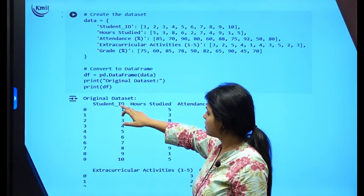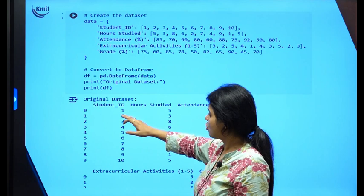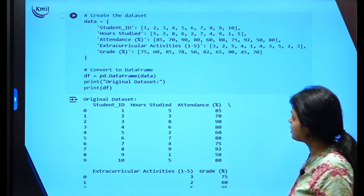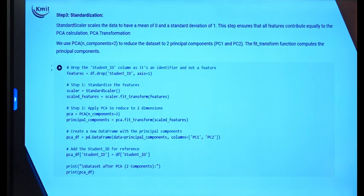I create a key-value pair where the key is the feature name and the values are the row values. I create a dataframe with student ID, hours studied, attendance, extracurricular activities, and grade. Then I perform standardization, which scales the data to a mean of 0 and standard deviation of 1 so all features contribute equally to the PCA calculation.